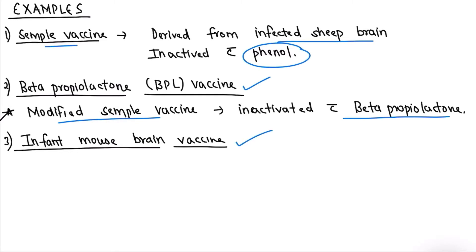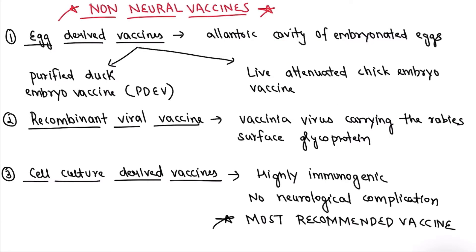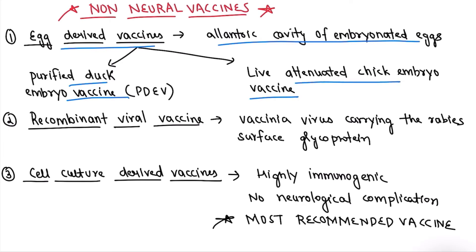Now coming to non-neural vaccines. The first type is egg-derived vaccines, which are developed in the allantoic cavity of embryonated eggs. The two vaccines to remember are Purified Duck Embryo Vaccine (PDEV) and Live Attenuated Chick Embryo Vaccine.